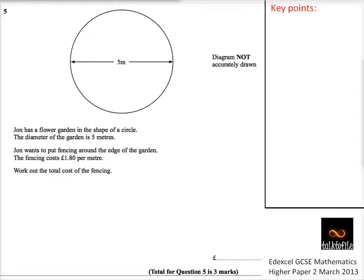Okay, so here we go. Question number five. We've got all sorts of information. We've got a picture here, and it's about a flower garden in the shape of a circle. So the diameter of it is five meters, which we've got here. And it says John wants to put fencing around the edge of the garden. Well, two things instantly strike me about circles.